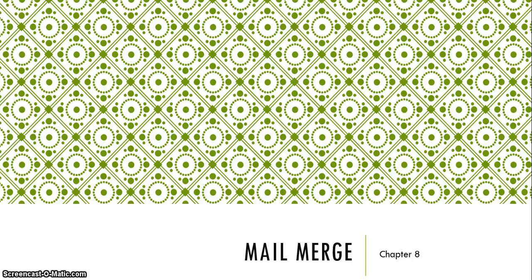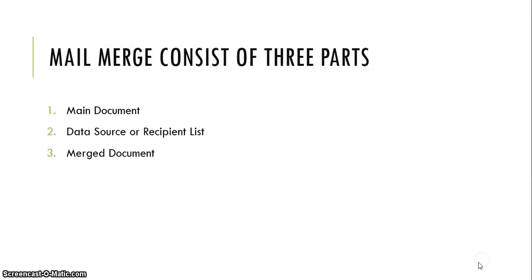Word Level 1, Chapter 8: Mail Merge. Mail Merge consists of three parts: first being the main document, second being the data source — another name for that is recipient list — and third being the merge document.